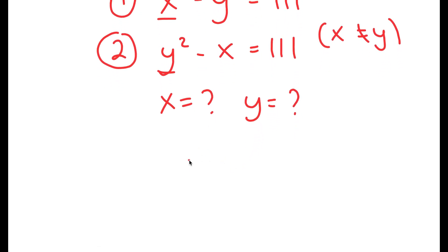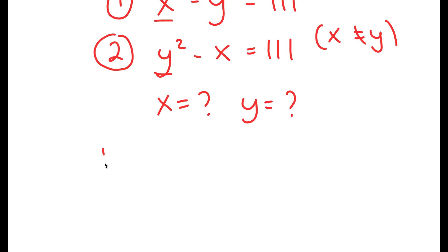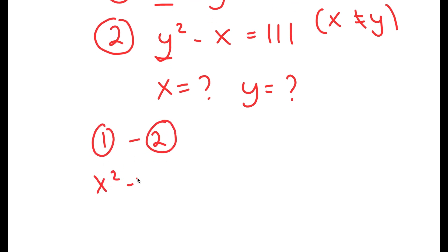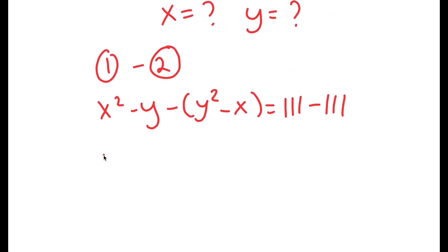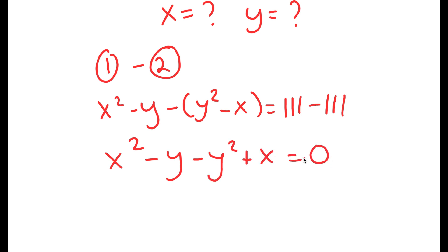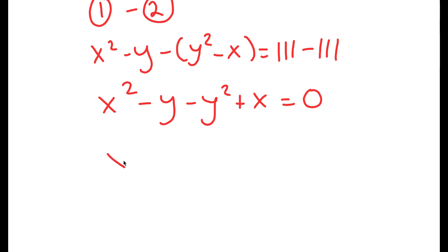To solve this, what I'm first going to do is subtract equation 2 from equation 1. So I get x squared minus y minus (y squared minus x) is equal to 111 minus 111, which turns into x squared minus y squared plus x minus y is equal to 0.